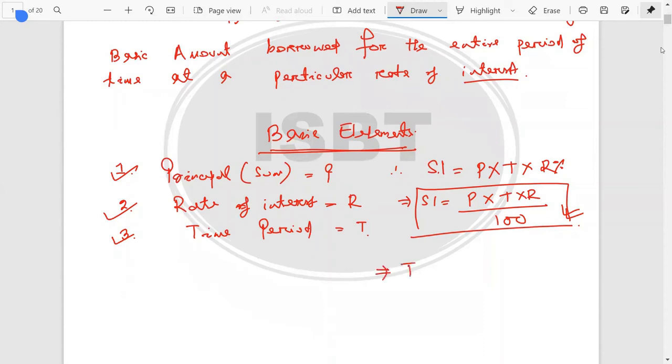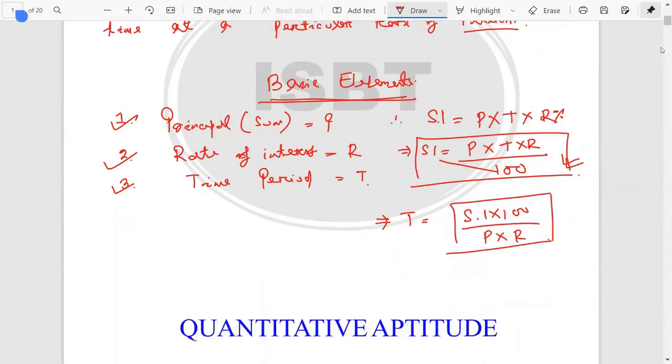So we can find here the Time is equal to - you can write Time equals SI into 100 divided by P into R. Then we can also find R is equal to SI into 100 divided by P into T.